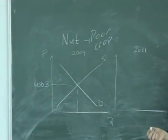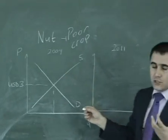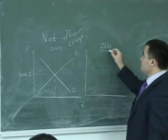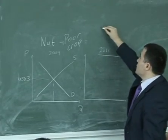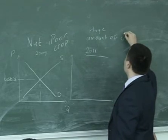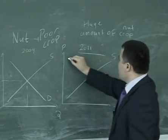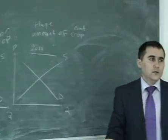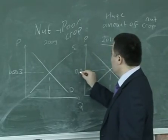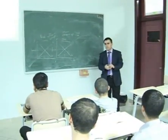Production of nuts, because of bad weather conditions or whatever reason, is very low. Because of this, the equilibrium price is very high. But in 2011, there is a huge amount of nut crop, so equilibrium will be just $0.50 - 50 cents.